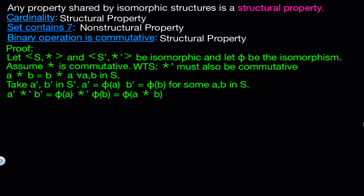Now that we have it written like this, we can see that phi of a star b is actually the same as phi of b star a, since a star b and b star a are the same thing in the set s. And now using the homomorphism property one more time, we get that this equals phi of b star prime phi of a. If we simplify this, we know that this equals b prime star prime a prime. So we have shown that for any a prime and b prime in s prime, a prime star prime b prime equals b prime star prime a prime, which is the same thing as saying that star prime is commutative.